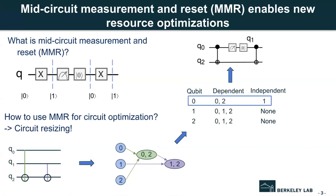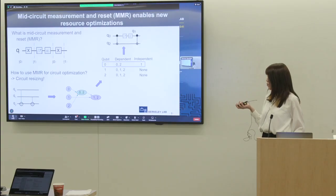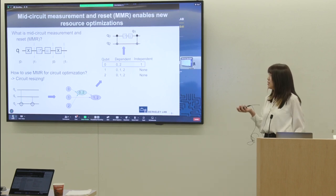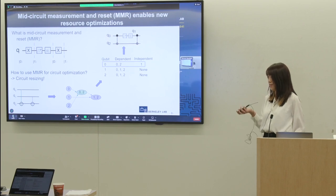we can first apply a CNOT gate between Q0 and Q2, as in the blue circle, and then we measure it, reset it, and we reuse Q0 for Q1. In this way, we can resize the input three-qubit circuit to a two-qubit circuit. And usually, a circuit with less number of qubits is better, and I will explain the reasons in the next slide.